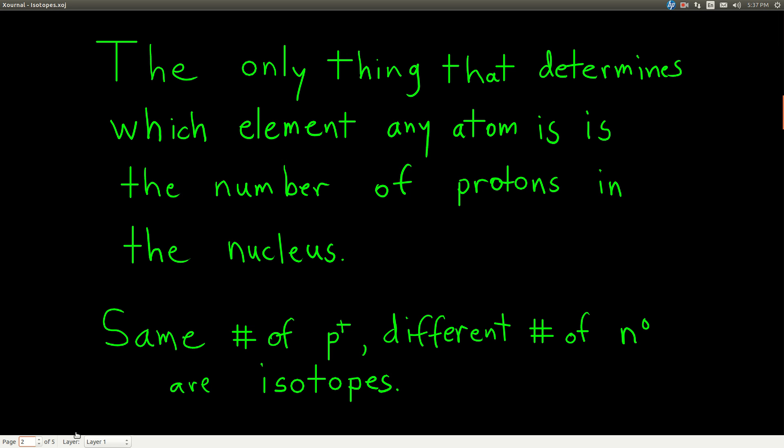Now, there's only one thing that determines which element any given atom is, and that's how many protons there are in its nucleus. This means that we could have two atoms that have the same number of protons as each other, meaning they're the same element, but they have different numbers of neutrons.